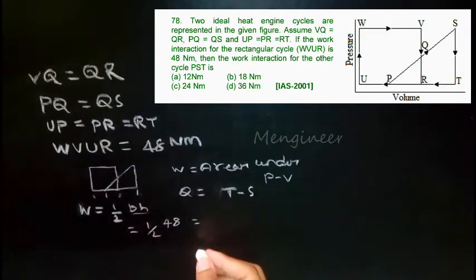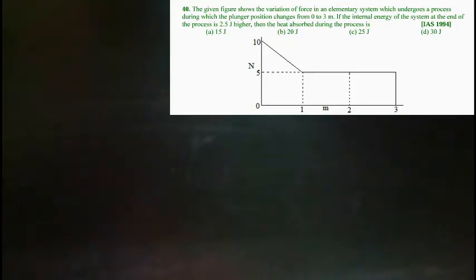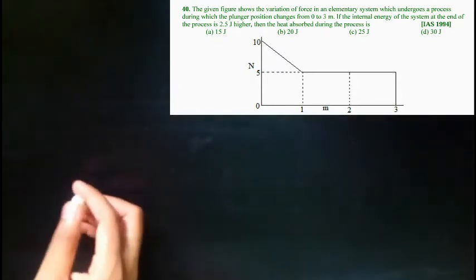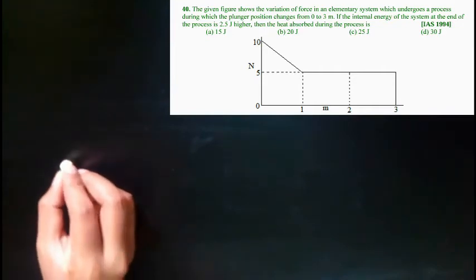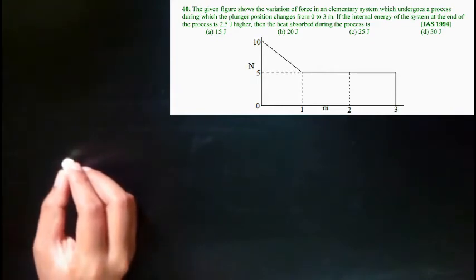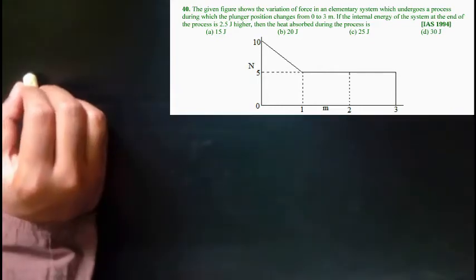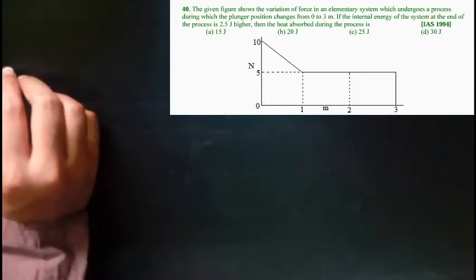Next problem: The given figure shows the variation of force in an elementary system which undergoes a process during which the plunger position changes from 0 to 3 meters. If the internal energy at the end of the process is 2.5 Joules higher—they have given U2 minus U1—then the heat absorbed during the process, we have to find the value of heat.